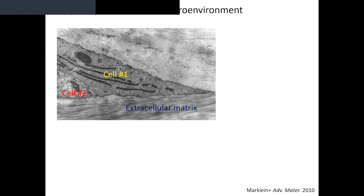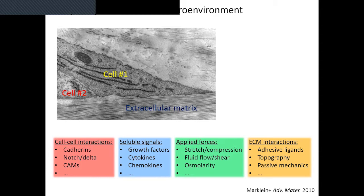In this image — a TEM image of cells within meniscal tissue — you can see this fibular matrix that the cells are engaging quite intimately. There are many different cues arising from this tissue space. These include interactions with other cells through receptors on the cell surface, soluble signals diffusing through the tissue or tethered to the extracellular matrix — like growth factors and cytokines — as well as mechanical forces of stretch and fluid shear, all of which provide biological signals for cells to process and respond to.